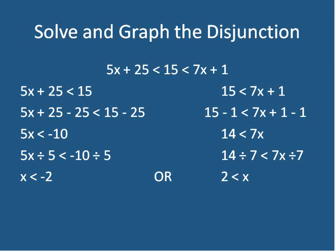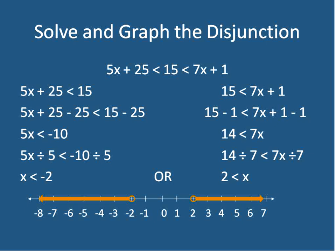These two solutions don't have any areas that cross, so this is definitely a disjunction. We would graph it this way: x is less than negative 2, so that would be on this side with an open circle at negative 2 and every number less than that. And x is greater than positive 2 — written as 2 < x, but we can read it backwards. The larger side of the sign is towards x, so x is greater than positive 2. Again, an open circle at positive 2, and everything on the right side selected. This is how we solve and graph a disjunction.